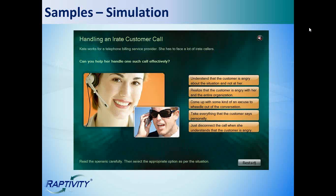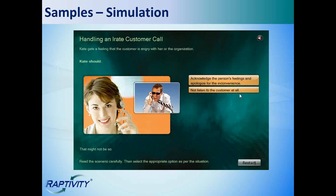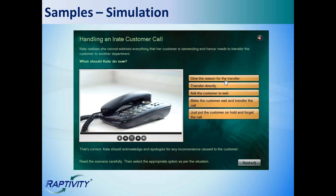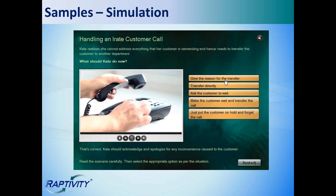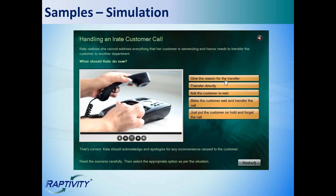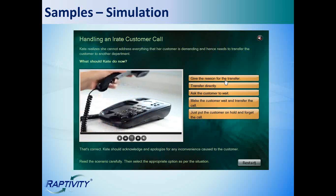Now this branching simulation presents a situation that our learner needs to navigate through. This one is dealing with customer service. So the situation is outlined. We have options to choose from. And depending on the option chosen, we're either taken to the next scene, or in this case, given some remedial feedback and asked to choose another option. Once the correct action is chosen, our next scene appears. And you can present the scenes as either images or videos, or a combination of both.